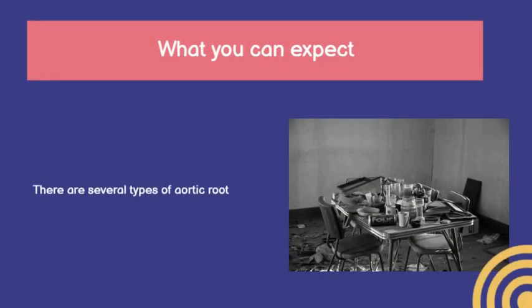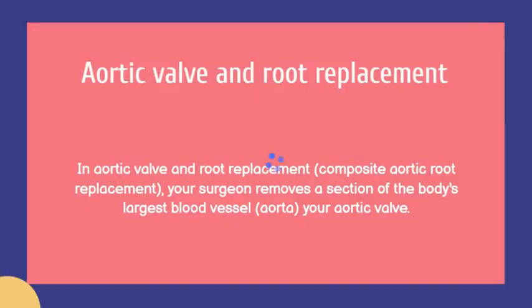There are several types of aortic root surgery. In aortic valve and root replacement, also called composite aortic root replacement, your surgeon removes a section of the aorta and your aortic valve. The section of the aorta is replaced with an artificial tube, or graft, and your aortic valve is replaced with a mechanical or biological valve. In another procedure, the surgeon replaces the enlarged section of the aorta with a graft.